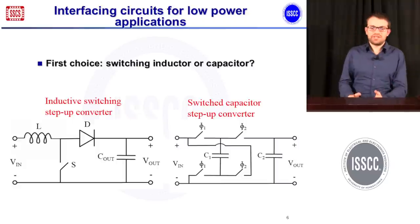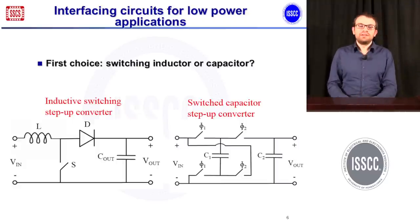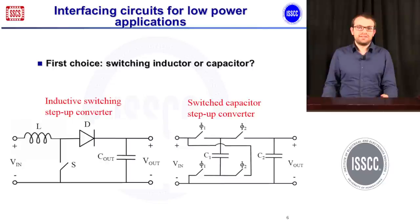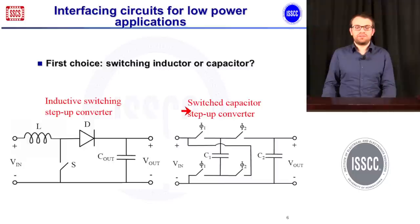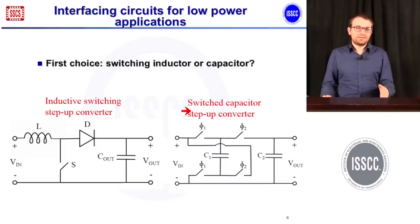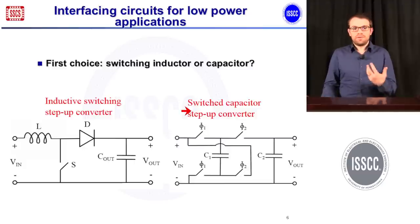So we need something in between. We need to put some circuit between the load and the solar cell, and this interfacing circuit can be simply an inductive switch converter or a switched-capacitor converter. Let's dive into these two circuits and understand why to choose one or the other.